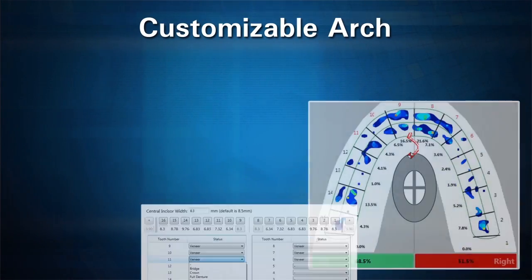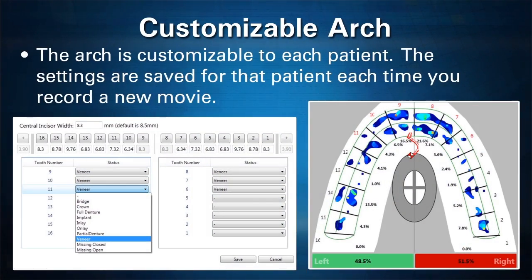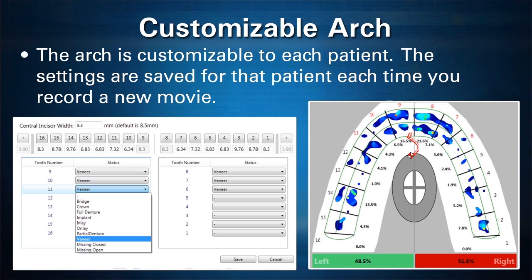The T-Scan superimposes a dental arch over the force data, which can be customized to the patient's dentition. The dental arch lets you observe biting forces on a per-tooth, quadrant, or left-to-right basis. This information is invaluable to you as a dentist in understanding the order of contacts as they relate to the bite.